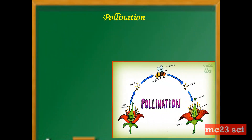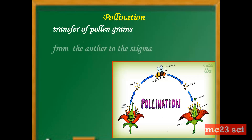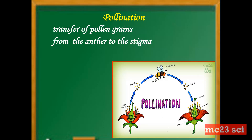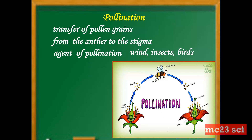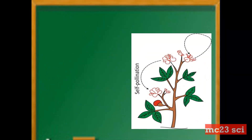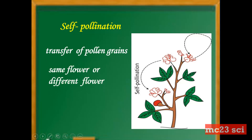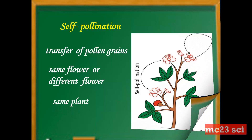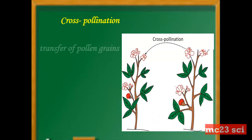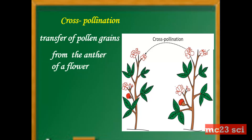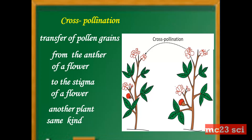Next is pollination. Pollination is the transfer of pollen grains from the anther to the stigma. The agents of pollination are the wind, insects, and birds. There are two kinds of pollination: self-pollination and cross-pollination. Self-pollination is the transfer of pollen grains from the same flower or a different flower on the same plant. Cross-pollination is the transfer of pollen grains from the anther of a flower to the stigma of a flower from another plant of the same kind.